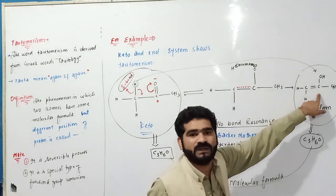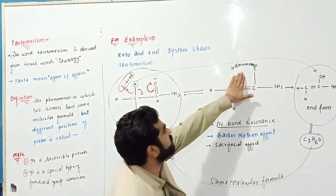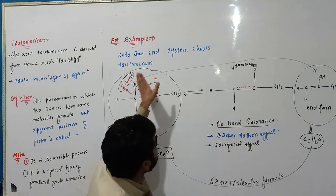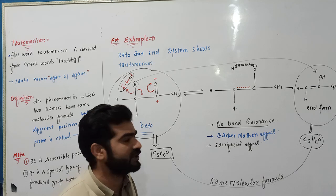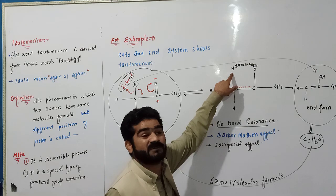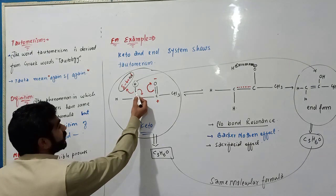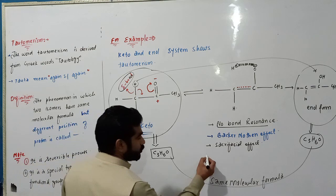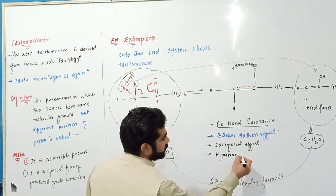Then you get propanol alcohol. So now I want to tell you, because there is no bond, no bond resonance, this process is also called Baker-Nathan effect. It is the saturation effect because the proton has given sacrifice. The delocalization of sigma electrons is called hyperconjugation.